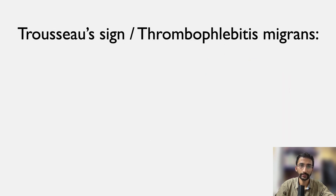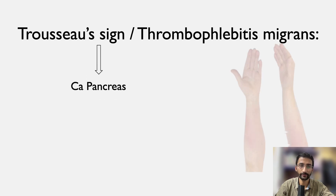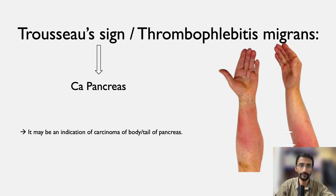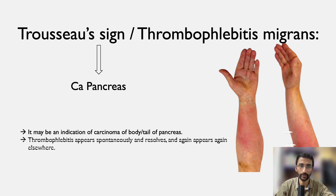Thrombophlebitis migrans is seen in case of carcinoma of the pancreas. It may be an indication of carcinoma of the body or tail of the pancreas. The thrombophlebitis appears spontaneously, resolves, and then appears again elsewhere.